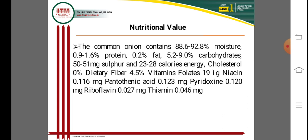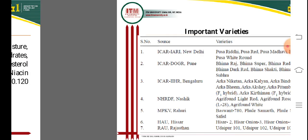The nutritional value of common onion includes 88.6 to 92.8 percent moisture, 0.9 to 1.6 percent protein, 0.2 percent fat, and 5.2 to 9.0 percent carbohydrate. Sulfur content is 50 to 51 milligrams, calories are 23 to 28 per 100g, cholesterol is 0 percent, and dietary fiber is 4.5 percent. Folates are 19 micrograms, niacin is 0.116 milligrams, and vitamins include thiamine, riboflavin, and pyridoxine per 100 grams of onion.